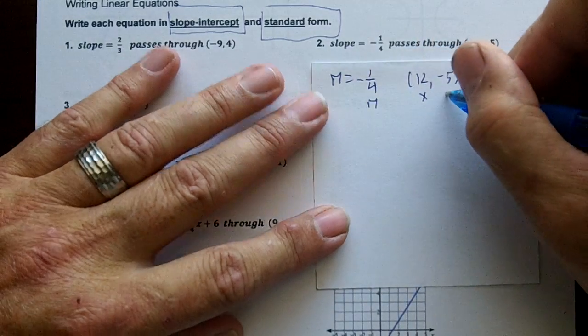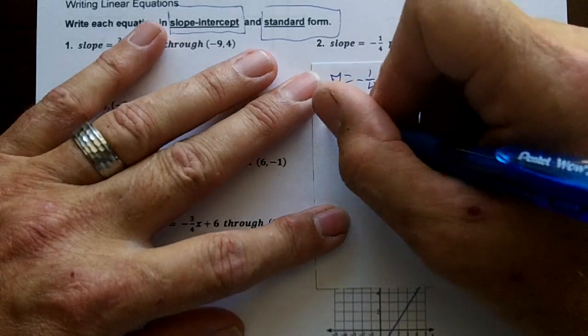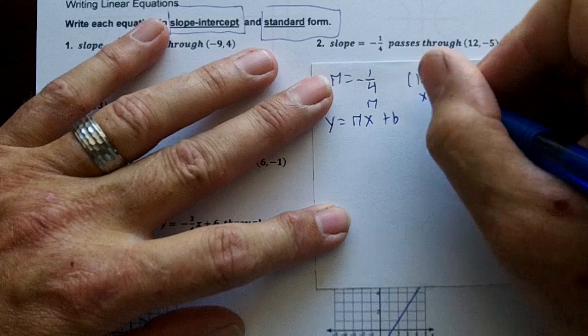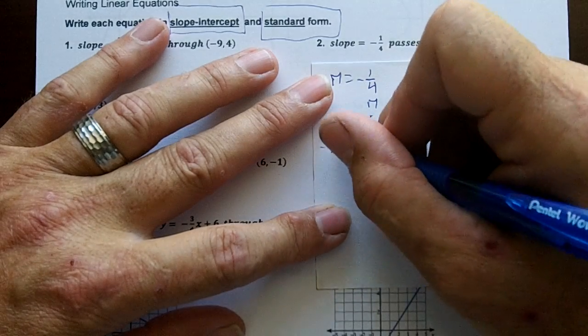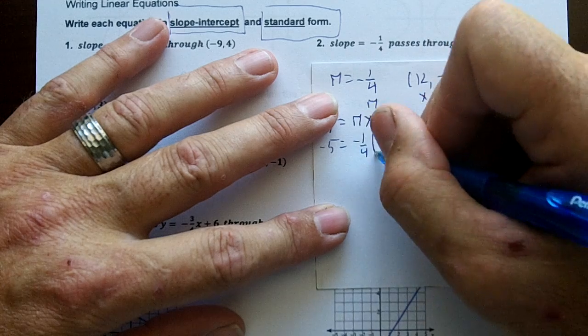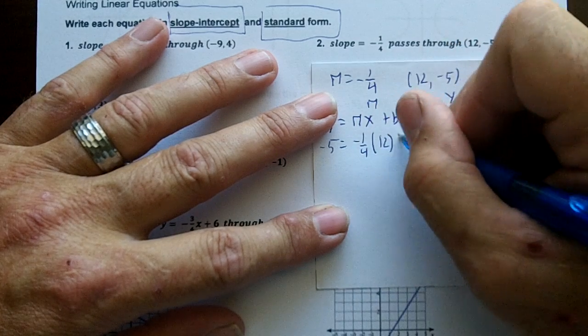This is my m, this is my x, this is my y. I know that y equals mx plus b, so I'm going to have my y is negative 5 equals my m is negative 1 over 4, parentheses, my x is 12, plus b.